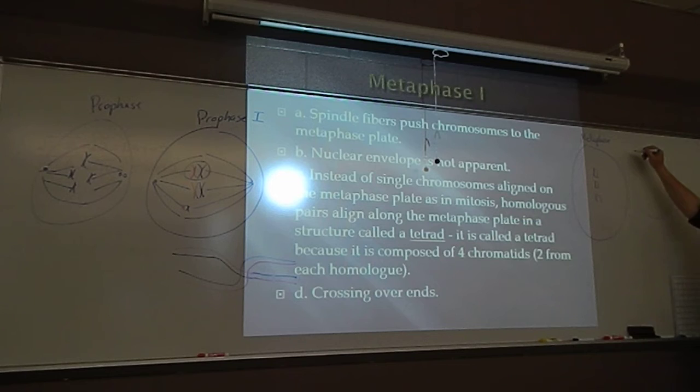Instead of metaphase mitosis, remember, they were single file, along the center portion of the cell called the metaphase plate. In metaphase one, the homologs pair up and are moved to the center of the cell, along the metaphase plate.